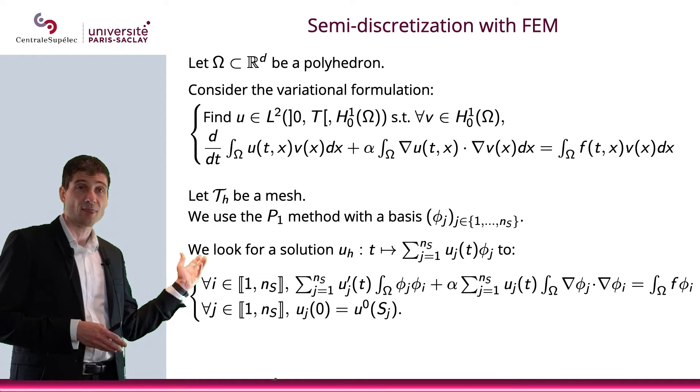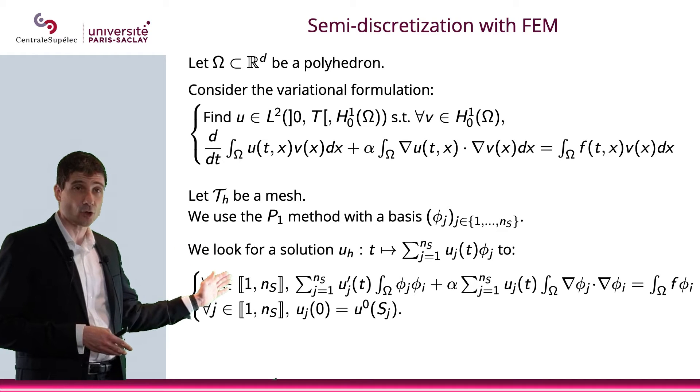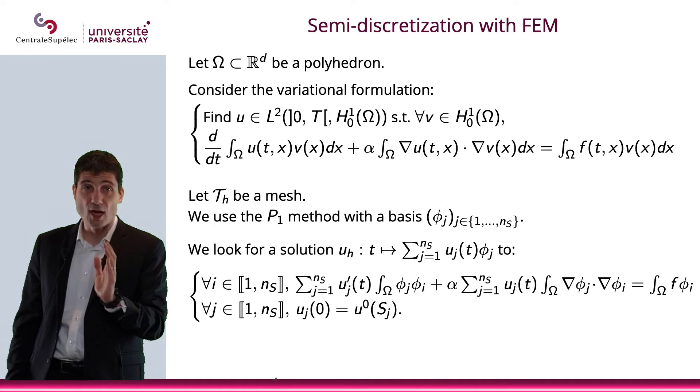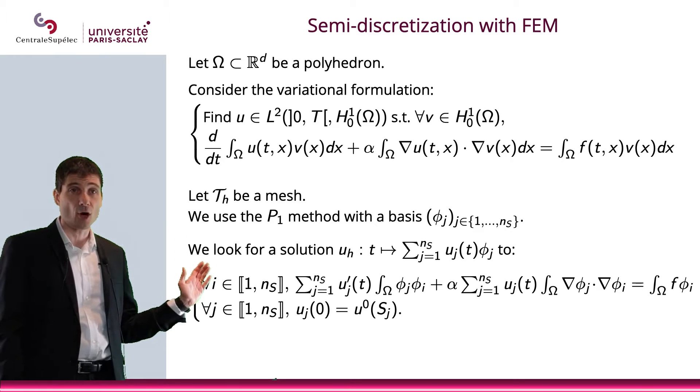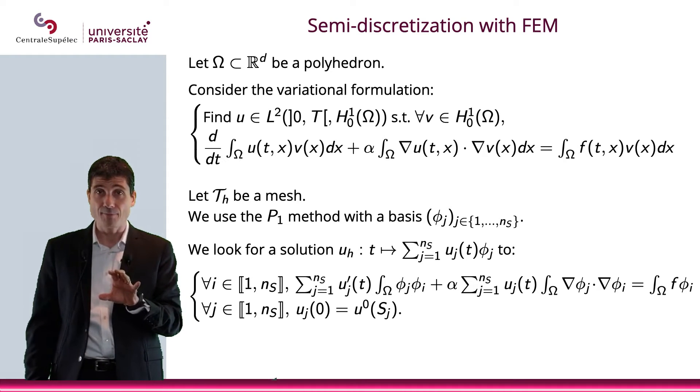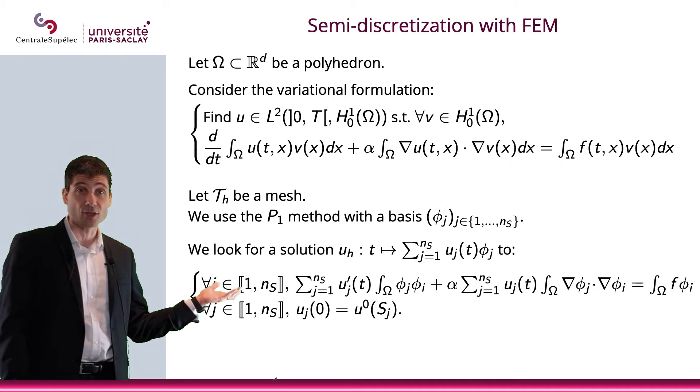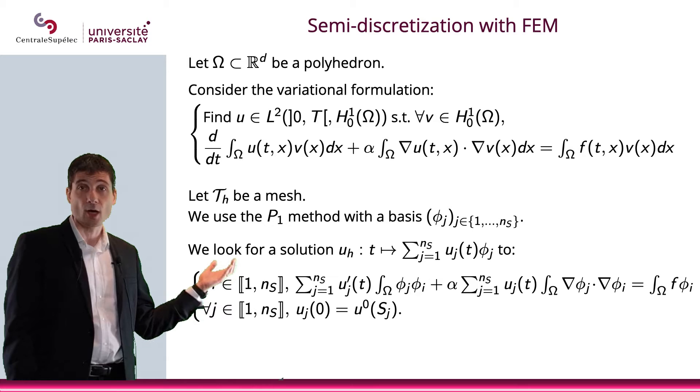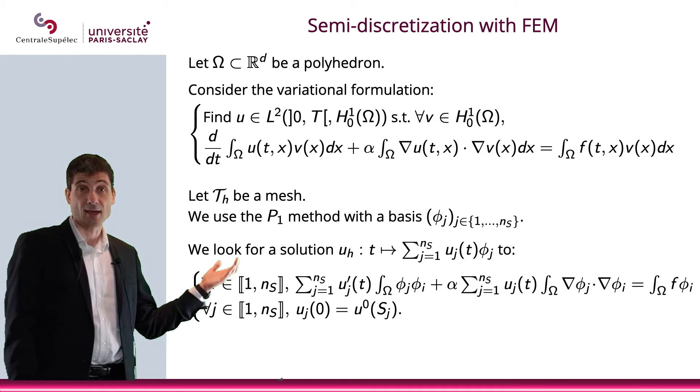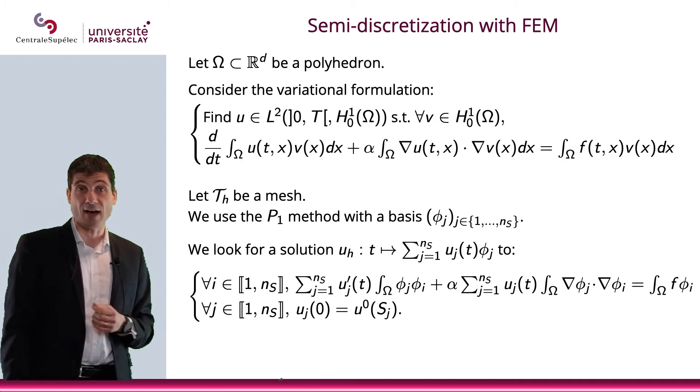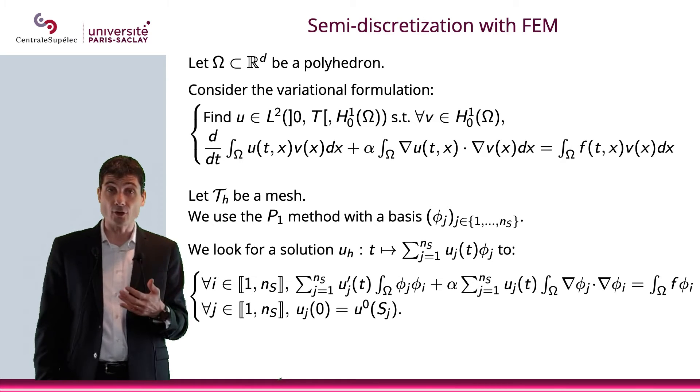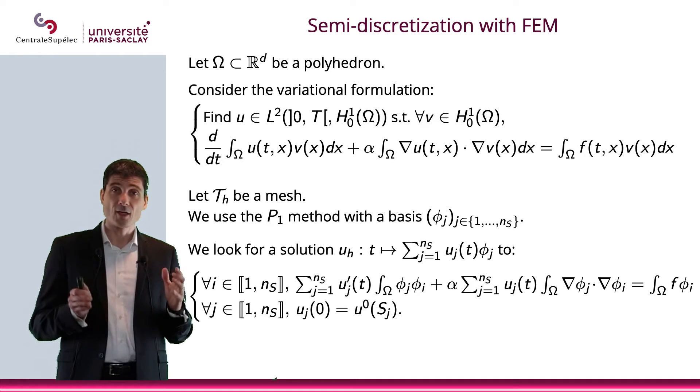So you see there is an additional term that we did not have before. The additional term is this term, sum from j equal 1 to n_s of u'_j(t), and the integral over omega of φ_j φ_i. This is a new term we did not have with the elliptic PDEs. But the rest of it we did have, we have the sum for j equals 1 to n_s of u_j (not u_j(t)), multiplied by the integral over omega of del φ_j inner product del φ_i, and of course equals to the right hand side. And we also have something that we didn't have before, that is the initial condition that appears here.